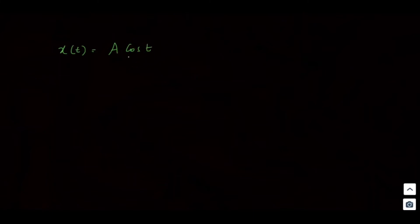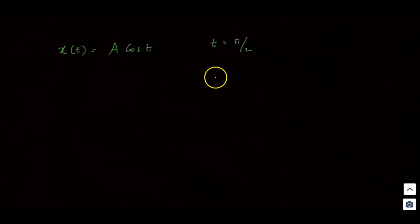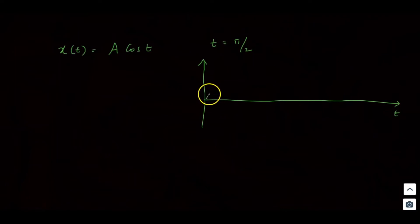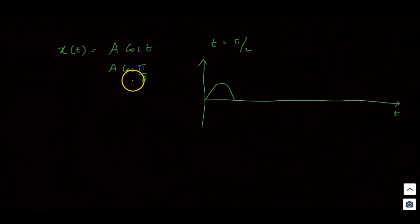Mathematically, the signal is represented — for example, x(t) = A cos(t). If you substitute t = π/2, you get A cos(π/2) = 0. So the value at t = π/2 is 0. You can tell the exact value from the mathematical equation — there is no uncertainty.